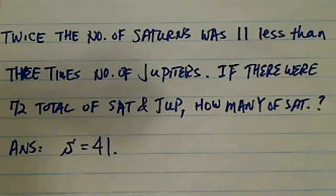Okay, so this is a word problem. Twice the number of Saturns was 11 less than 3 times the number of Jupiters. And then you were told together you have 72 Saturns plus Jupiters. How many Saturns are there? The answer is 41.